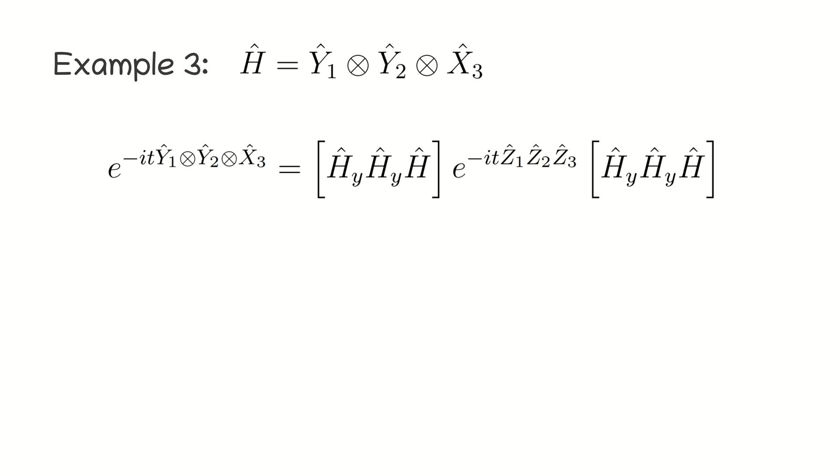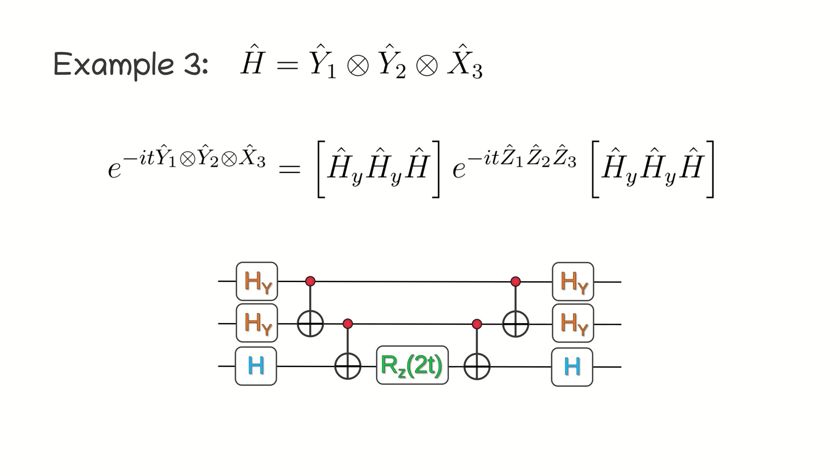One more example. Using the decomposition of the matrix exponential and identities for the Pauli matrices, we can get the following equation. And this means that we should apply the operators in the squared braces to the corresponding qubits before and after the evolution operator for Hamiltonian with three Z matrices.